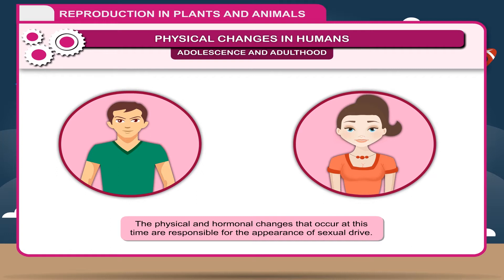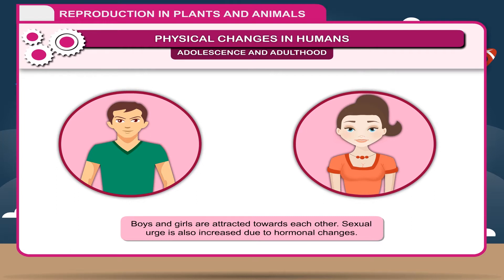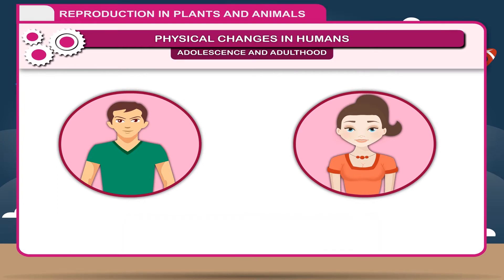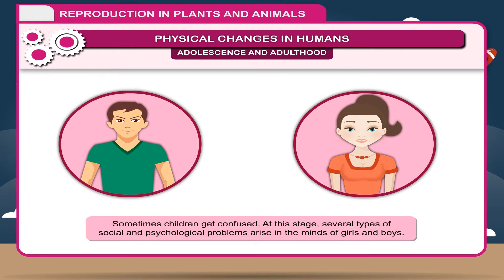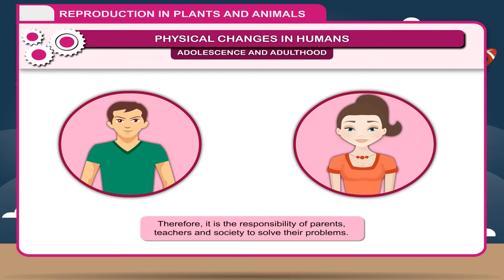The physical and hormonal changes that occur at this time are responsible for the appearance of sexual drive. Boys and girls are attracted towards each other, and sexual urge is also increased due to hormonal changes. Sometimes children get confused, and several types of social and psychological problems arise in the minds of girls and boys. Therefore, it is the responsibility of parents, teachers and society to solve their problems.